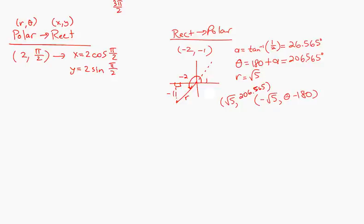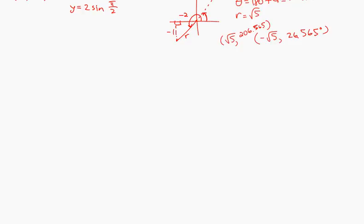But another way of getting there is to use this angle here, which is 180 degrees less. So that's like 26.565. And then the only difference is instead of using a positive √5, I'm going to use a negative √5 for the R. So that's how we convert to rectangular. I mean from rectangular to polar.